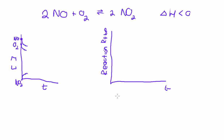For the reaction rate graph, remember we only have two lines: forward and reverse. We're going to look at those simultaneously. When the reaction starts, our forward reaction will meet up with our reverse reaction to reach a point of equilibrium. Now at this point, let's have a disturbance occur — an increase in pressure.